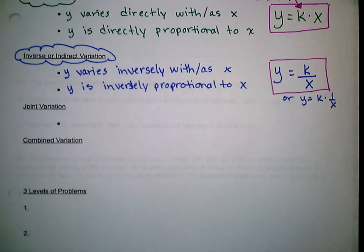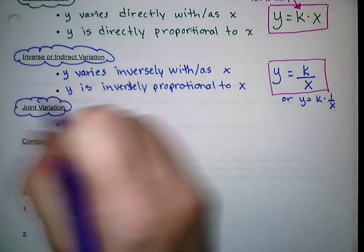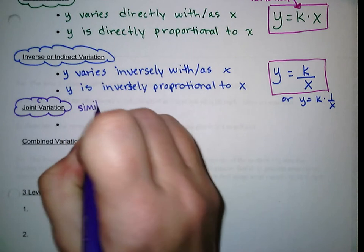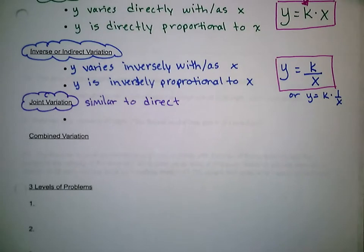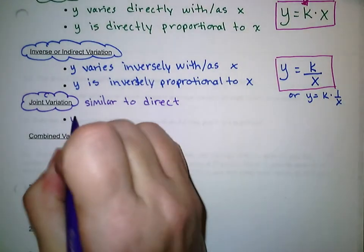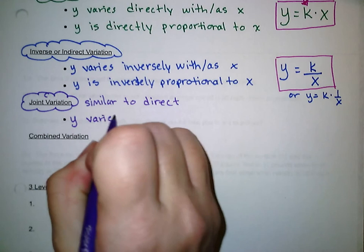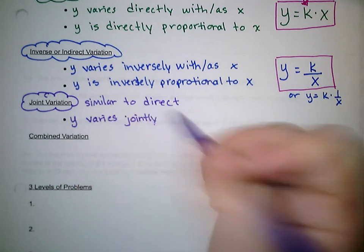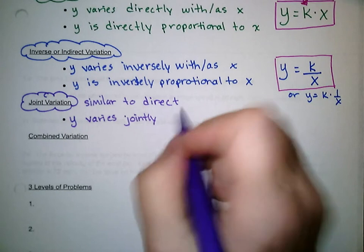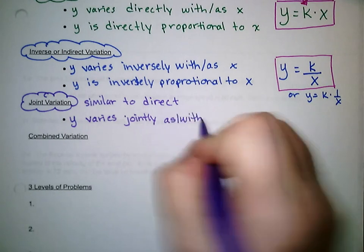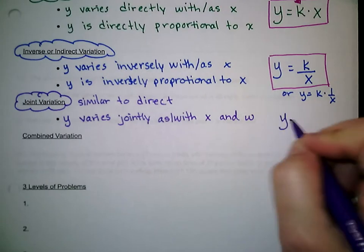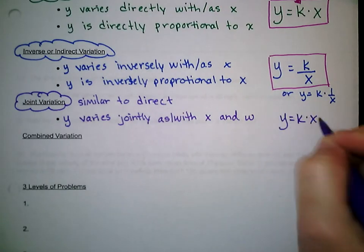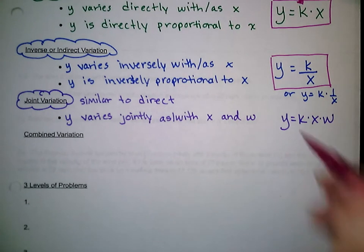The next type is joint variation, which is similar to direct variation but involves more than one variable. When it says 'Y varies jointly with X and W,' our formula would be Y equals K times X times W. So you just have more than one variable multiplied together.